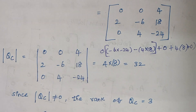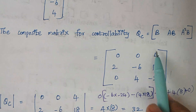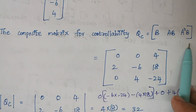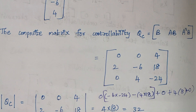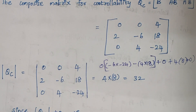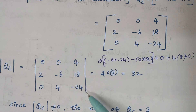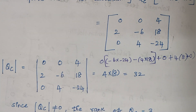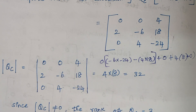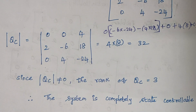To summarize the controllability check: we calculated B, AB, and A²B, substituted them into the composite matrix QC, and took the determinant. If the determinant is not equal to 0 and the rank matches the rank of matrix A, the system is controllable. Here both rank values equal 3, therefore the system is completely state controllable.